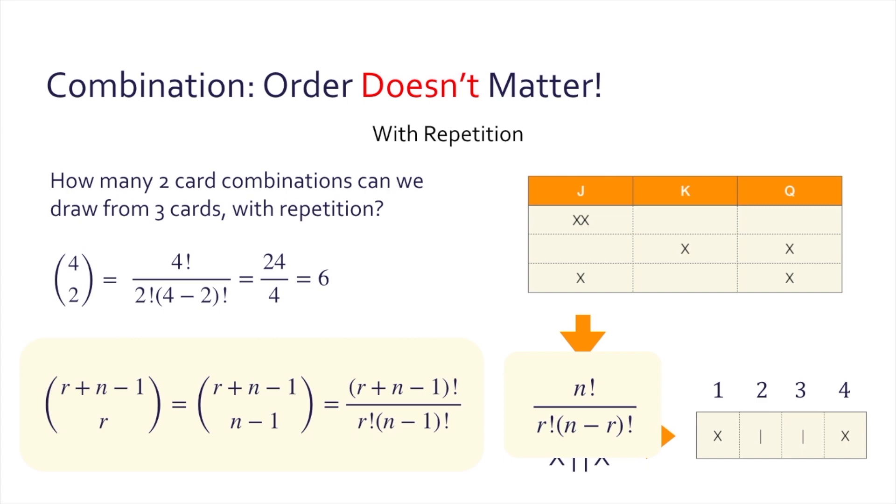Notice that the formula is the same for r plus n minus one choose r as well as r plus n minus one choose n minus one. This is because the problem is symmetrical. We only need to place the dividers to know where the x's are, or only place the x's to know where the dividers are.